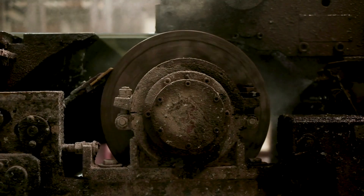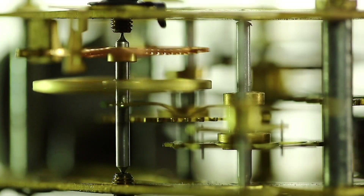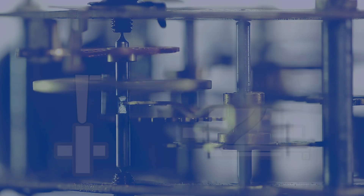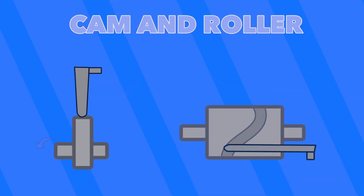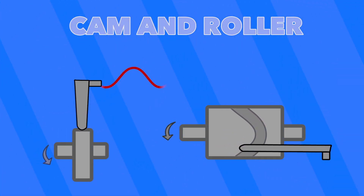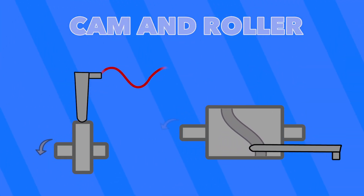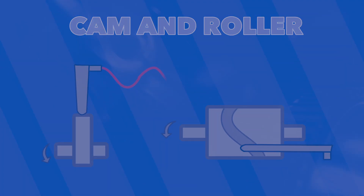When it comes to transforming rotary motion into linear actuation, there's likely no better mechanism than that of a cam and roller. Cam and roller mechanisms are often used in engines, repeating machinery, and other manufacturing applications.